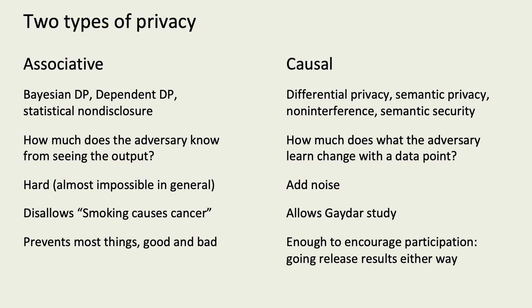For example, consider a study showing that smoking causes cancer. Despite the great importance of such a study, it may be disallowed under an associative notion of privacy. Indeed, after knowing that smoking causes cancer, you know that anyone you see smoking has an elevated risk of cancer. However, that holds regardless of whether a smoker participated in the study.